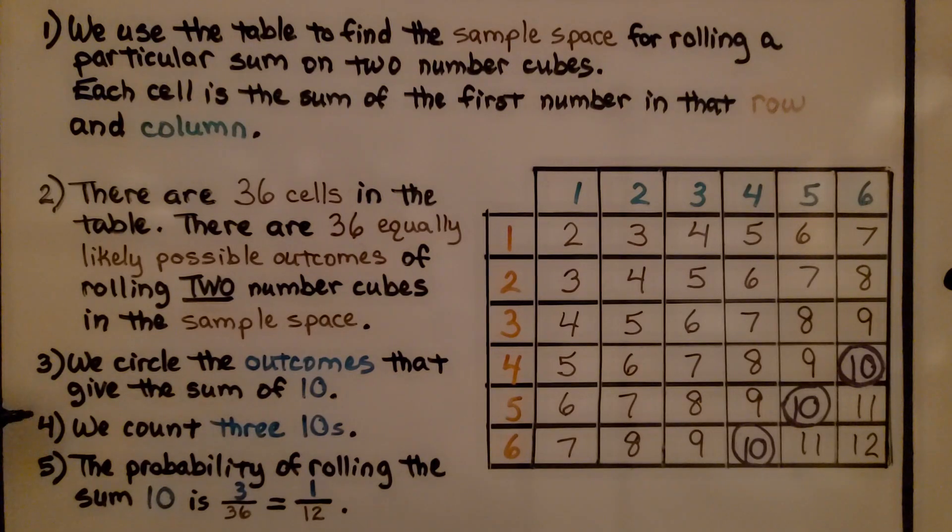We counted 3 tens. The probability of rolling the sum 10 is 3 out of 36, which is 3/36. We can simplify that to 1/12.